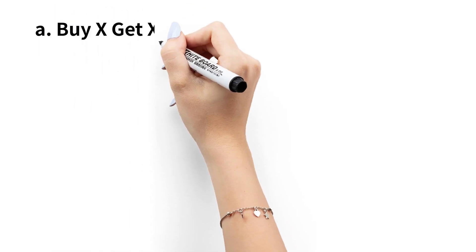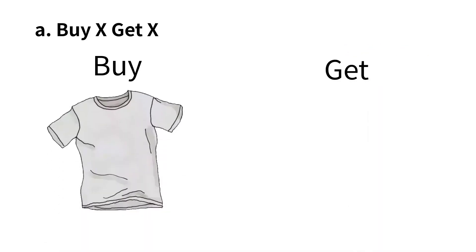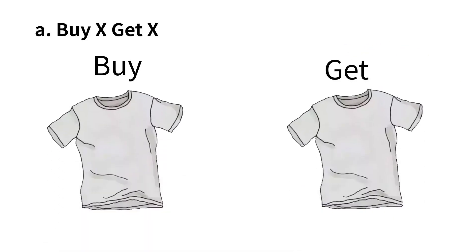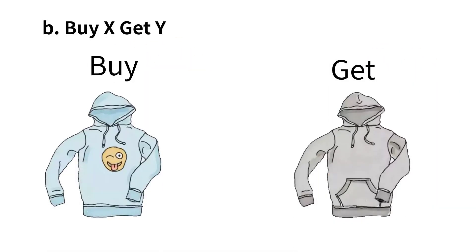Let's understand how buy X get X works. If you buy a grey t-shirt, you are eligible to get the same grey t-shirt as a free gift. For buy X get Y, if you buy a blue hoodie, you are eligible to get a grey hoodie as a free gift.